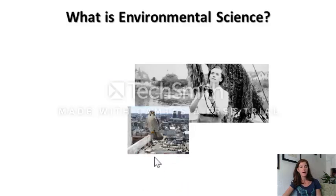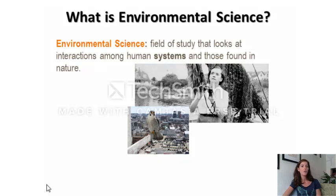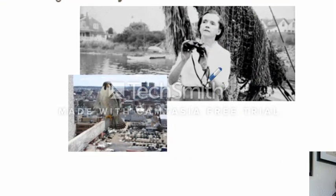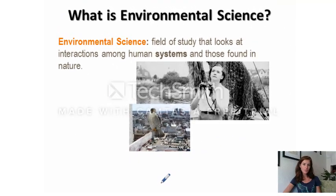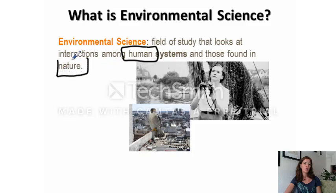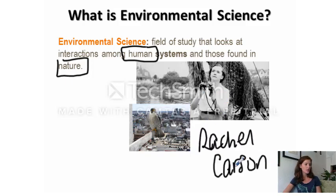Environmental science is a field of study that looks at the interactions among human systems and among systems found in nature — humans and nature, that's what we're looking at throughout the year. This is Rachel Carson, a key figure in environmental science who greatly influenced the field. She published the book Silent Spring, which really exemplifies what environmental science can do.